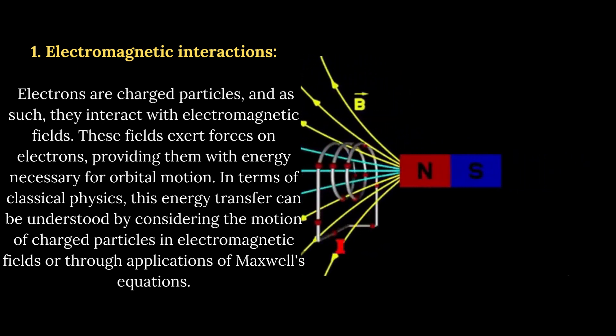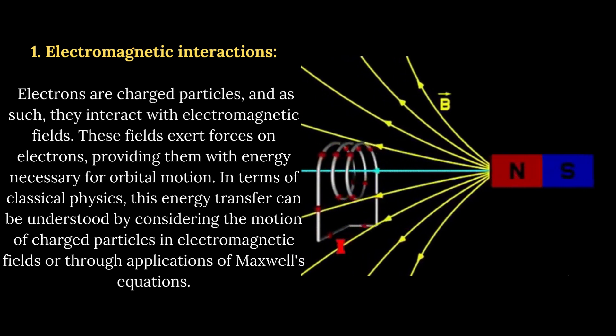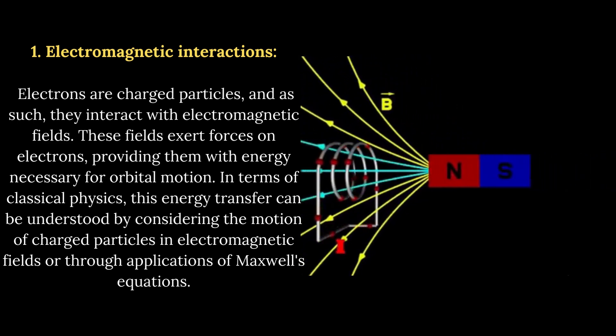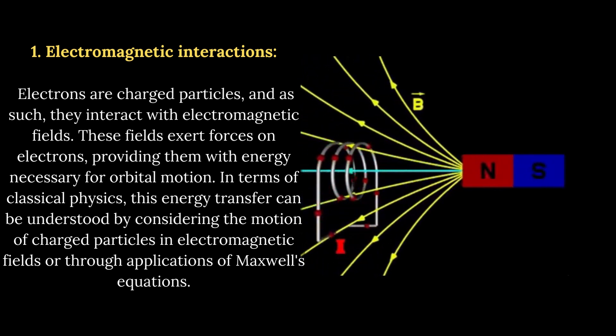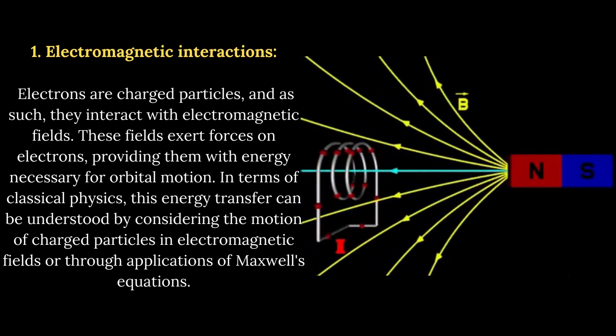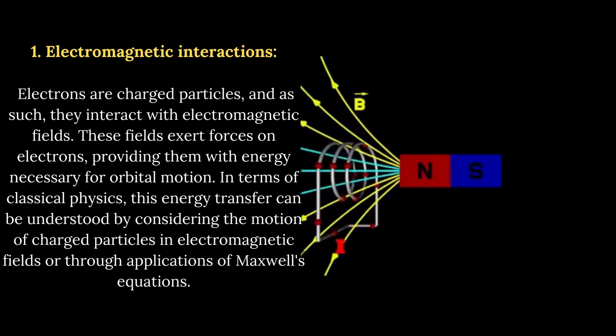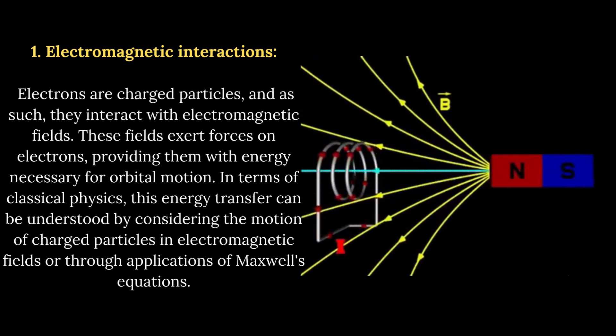Electrons are charged particles, and as such, they interact with electromagnetic fields. These fields exert forces on electrons, providing them with energy necessary for orbital motion. In terms of classical physics, this energy transfer can be understood by considering the motion of charged particles in electromagnetic fields or through applications of Maxwell's equations.